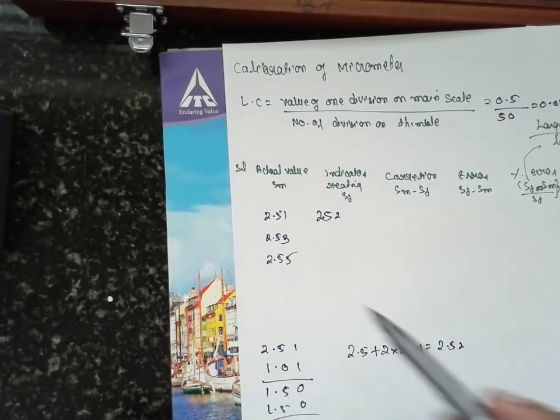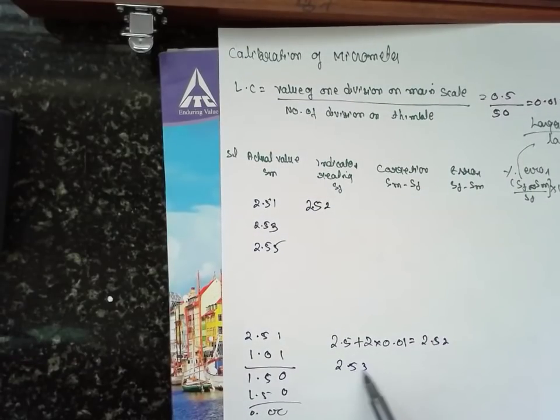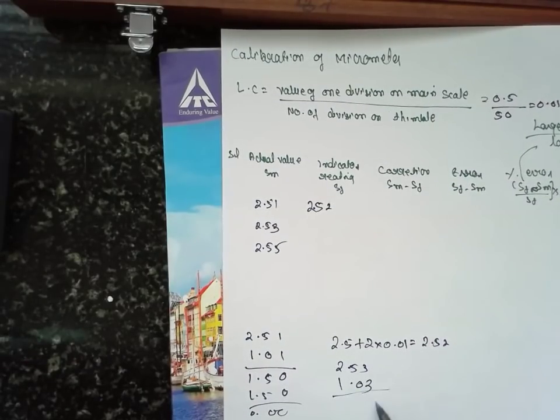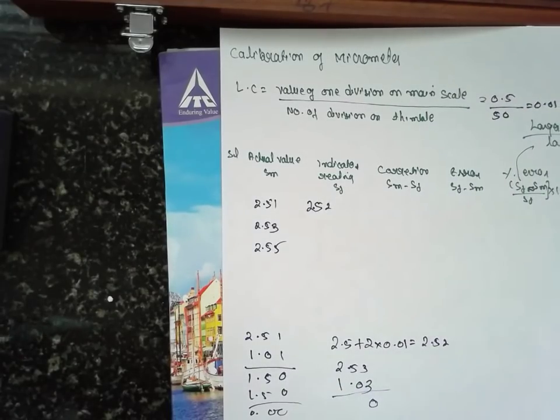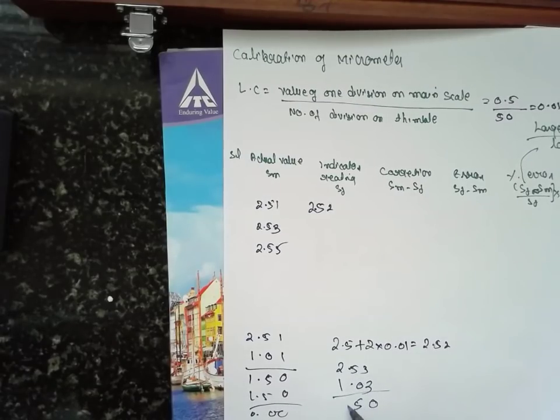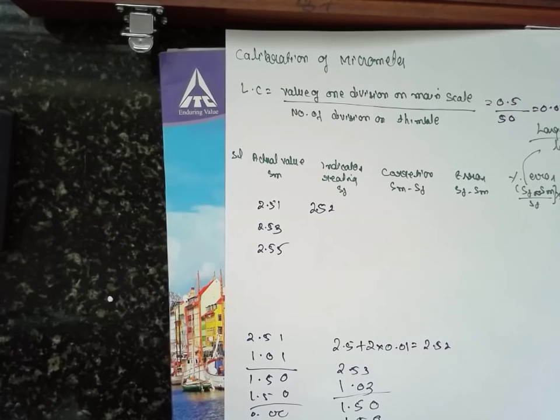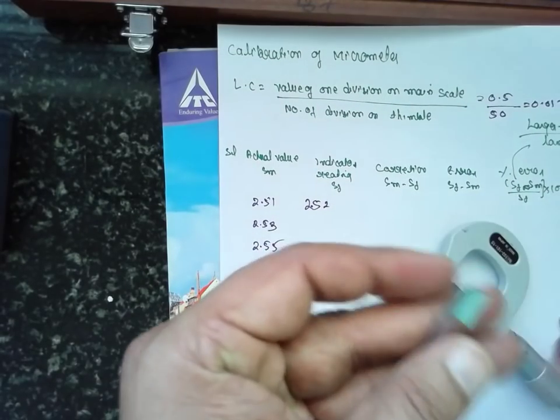Next, I will go for 2.53. I will make this one as 0. Based on the slip gauges, I am making this one 0. If 3 is not available, then you have to go for 4.53. I am making this one 0.5 as it is: 1, 1.5, and 0.0. That means 1.3 is required for the calculation.